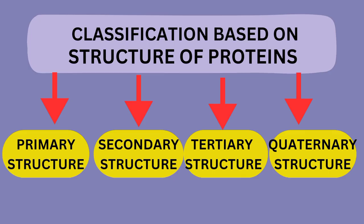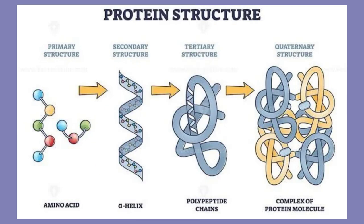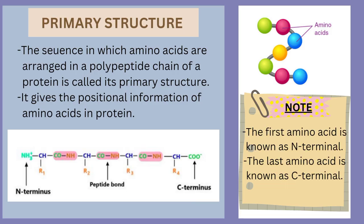Let's discuss the classification of proteins. Based on structure, they are classified into primary, secondary, tertiary, and quaternary structures. You can see how the primary structure gets more condensed to form the secondary structure, which then condenses further to form the tertiary or quaternary structure. The primary structure is formed when different amino acids connect with each other by forming peptide bonds to create a long polypeptide chain.